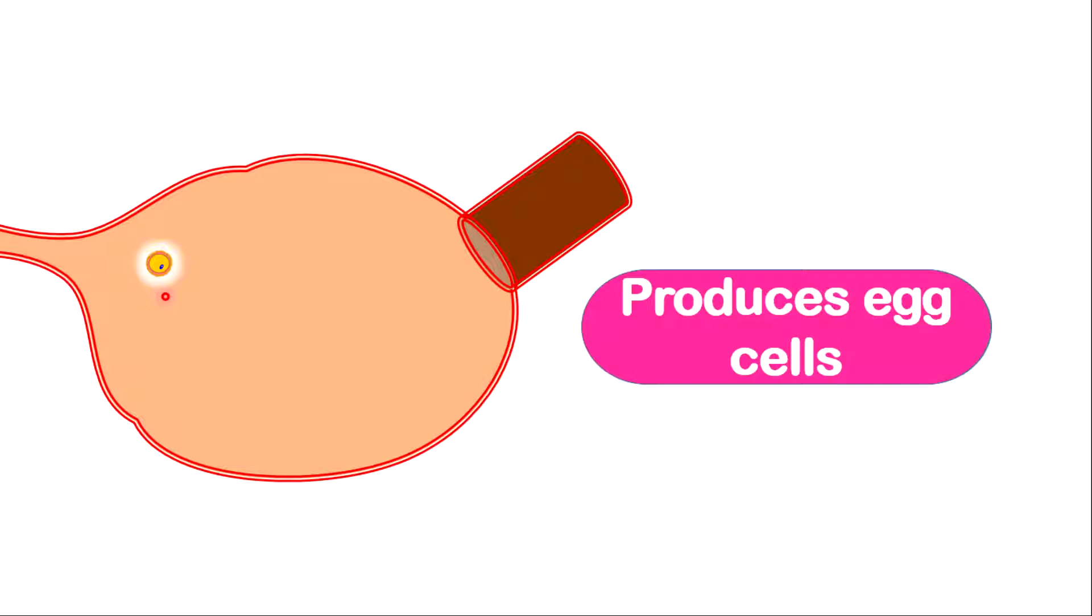The follicle will eventually develop and become mature. When it's mature enough, the egg will be released by a process called ovulation. So the egg will be released into the oviduct. The remaining portion of the egg after ovulation is called corpus luteum or the yellow body. This yellow body is what will be responsible in secreting progesterone.